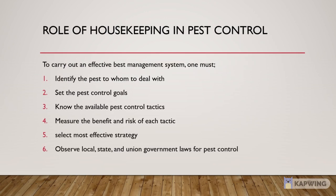The next topic is the role of housekeeping in pest control. To carry out an effective pest management system, the housekeeping must: 1. Be aware about the type of pest to deal with. 2. Set the pest control goal — whether to prevent, suppress or totally eradicate the pest. 3. Know the available pest control tactics. 4. Measure the benefit and risk of each tactic. 5. Select the most effective method. 6. Observe local, state and union government laws for pest control.